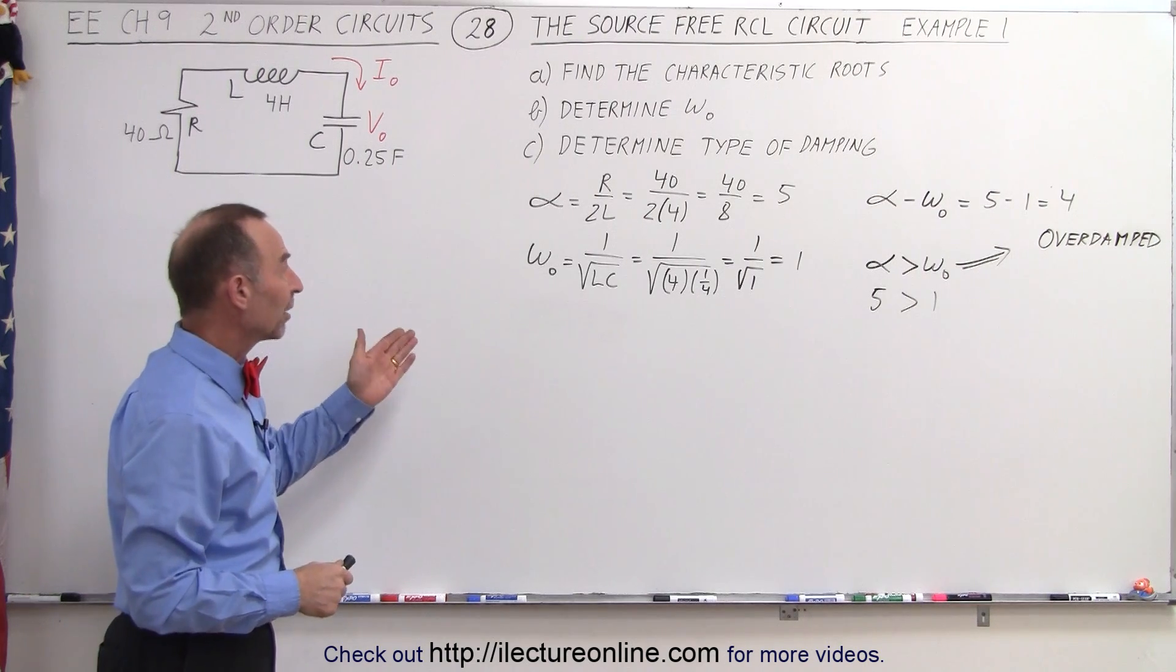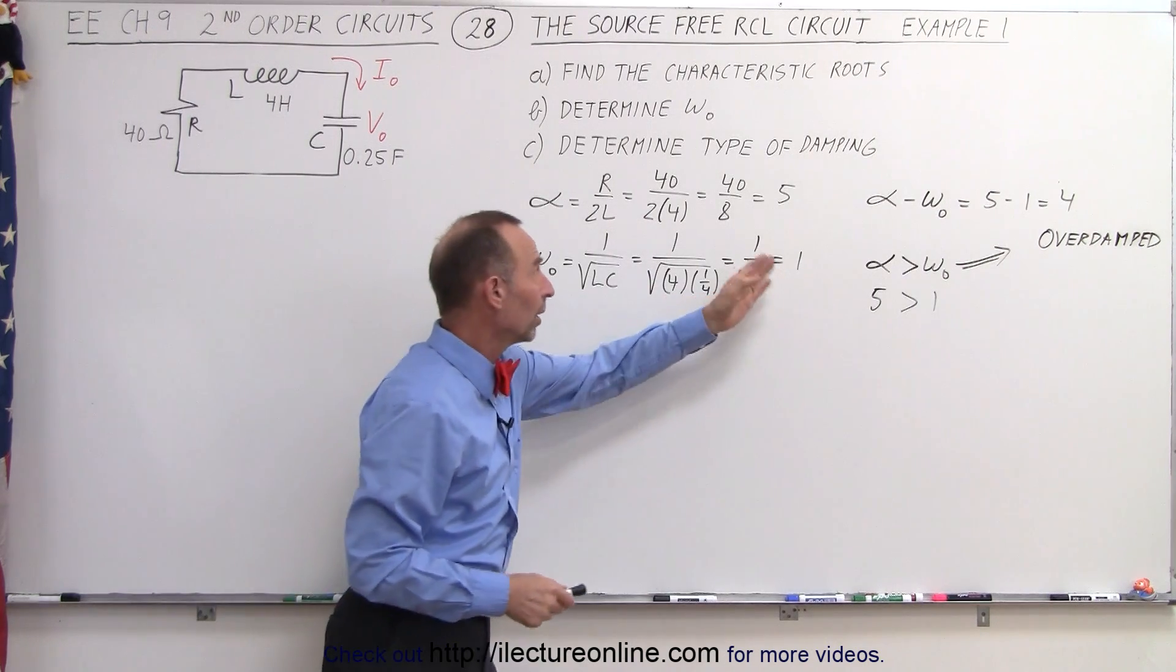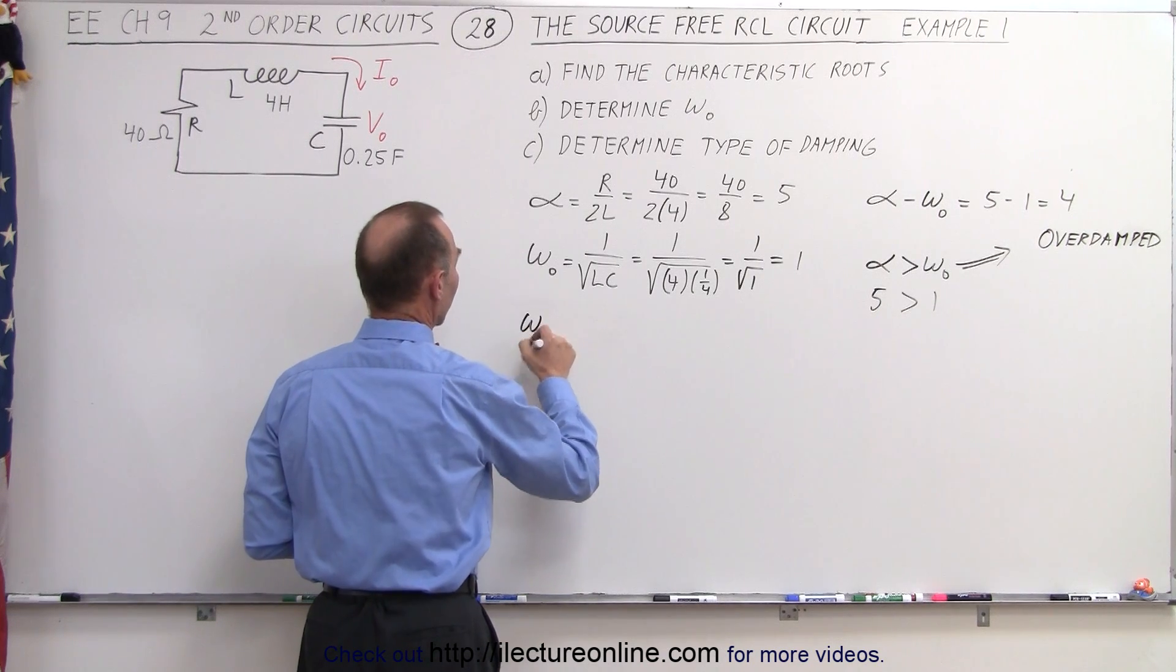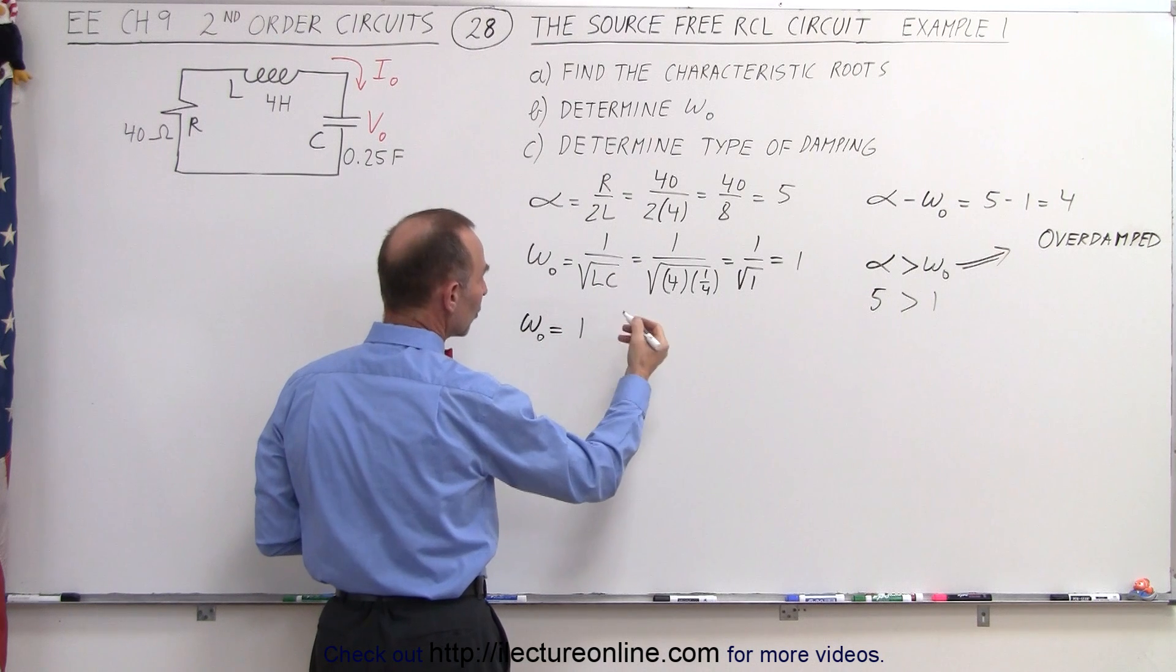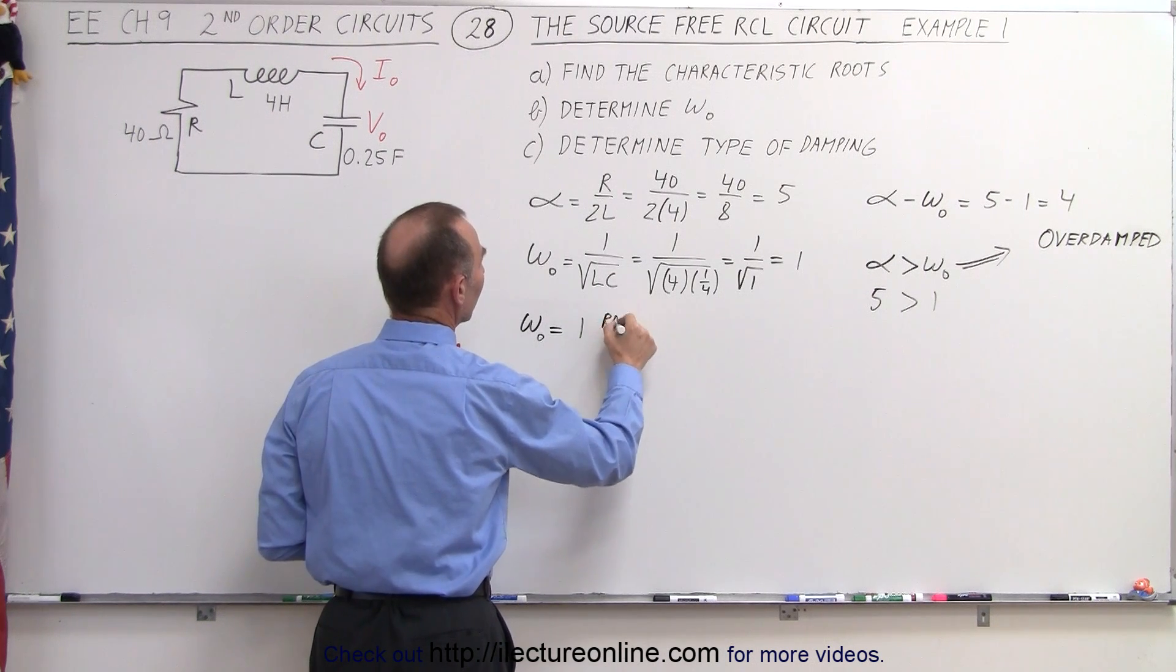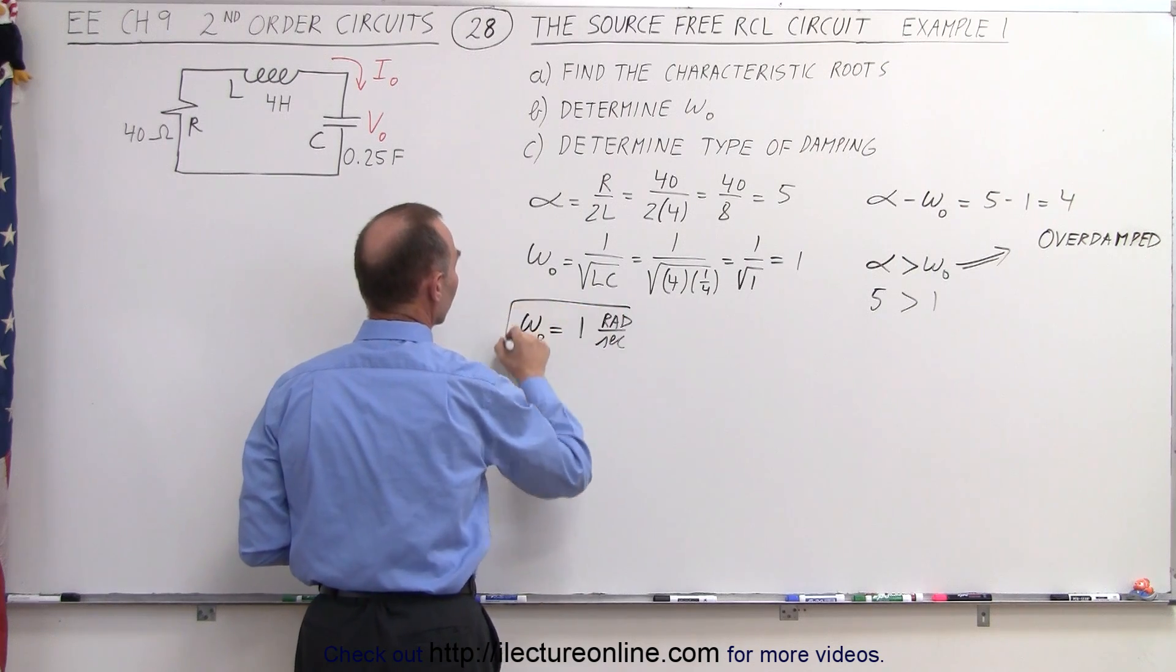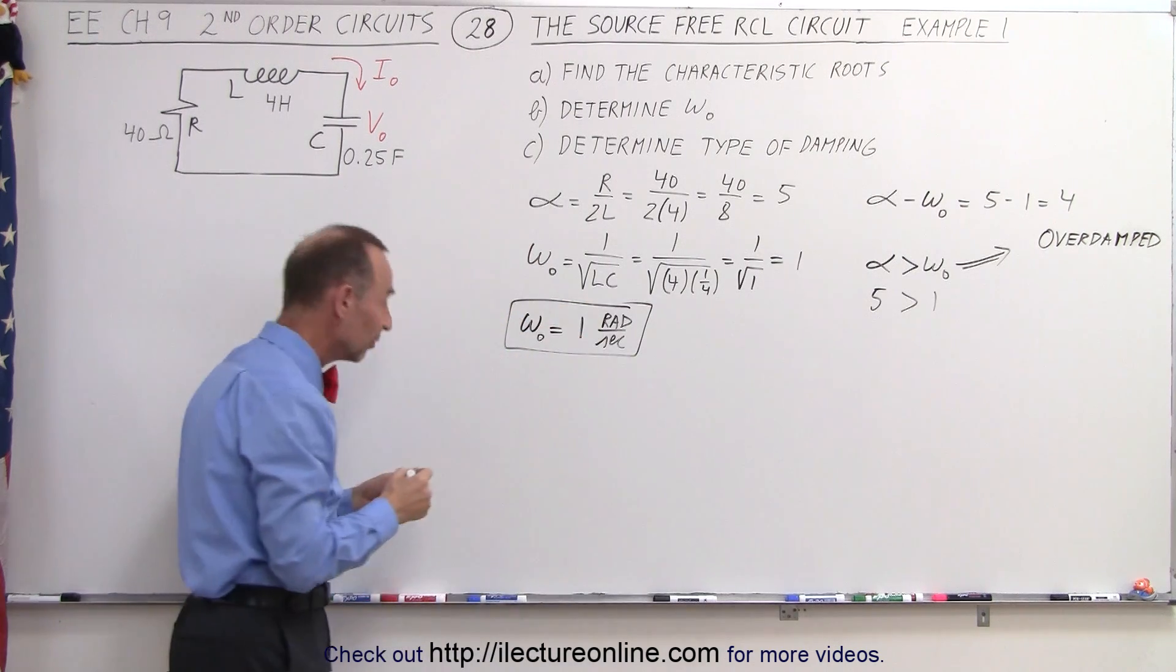So now we know it's an overdamped case. Now let's find omega sub-naught. Well we found it, it's equal to 1 but let's put some units to that. We see that omega sub-naught, which means the natural frequency, is equal to 1 and the unit for that would be radians per second. That is the proper units for the natural frequency.